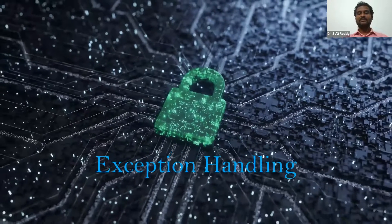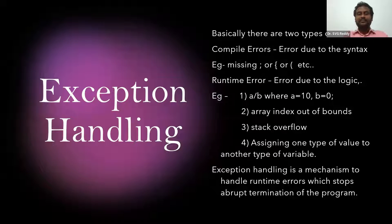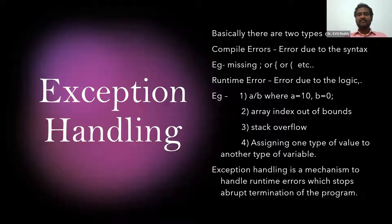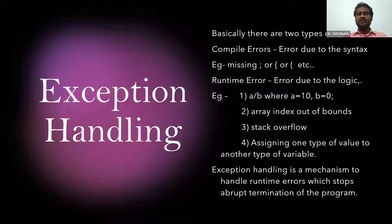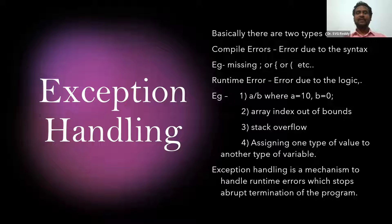Any program will have two types of errors basically: compile-time errors and runtime errors. Compile-time errors are errors due to the syntax — for example, if you miss a comma, a space, or a semicolon, or if you have any sort of lapse in physical alignment, it leads to compile-time errors.